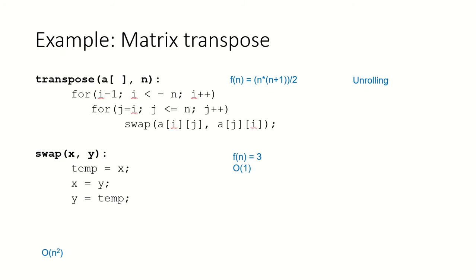Let's take an example where we are computing the transpose of a matrix. This is the algorithm. It has two loops where the outer loop is running from i equal to 1 to n, and the inner loop is running from i to n. Within this inner loop, the function swap is being called. If we can compute how many times this function will be called, then we would know the time complexity of this algorithm, because the statements within the loops are the ones which contribute to the time complexity.